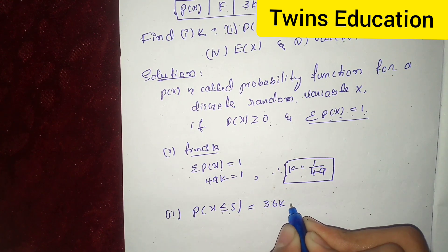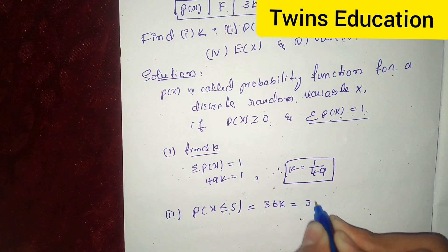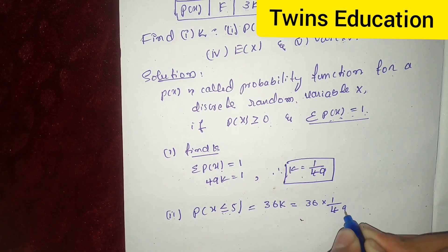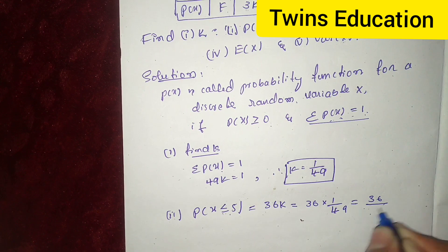So add, we will get 36k. What is the value of k? 1 by 49. 36 into 1 by 49, which is equal to 36 by 49.